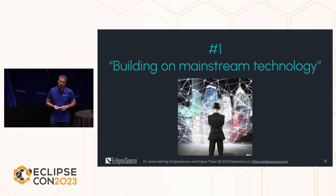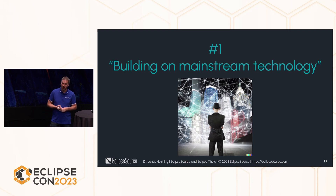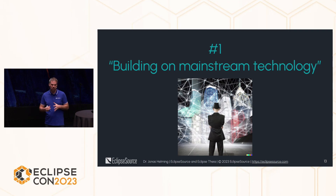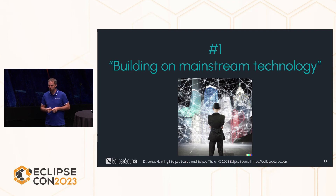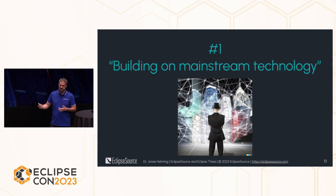Coming to number one — and that's by far for me the most important thing, at least in the current phase — that's what I call building on mainstream technology. Mainstream technology for me is the technology that most software developers use in their projects. Most software developers build business applications, not tools. Tools have always been a niche. But if we use the same technology stack for both business applications and tools, we actually build on mainstream again, and that's what's happening today: web-based tools use HTML, JavaScript, TypeScript, CSS, React — all the technologies that all developers know from creating business applications.